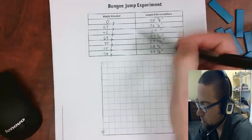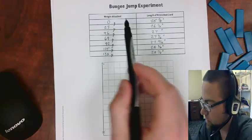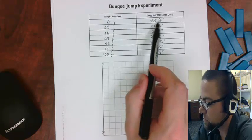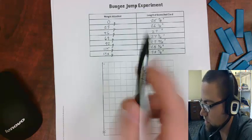Okay, welcome back. So your table should look something like this. When it was 0 grams, it was 25 and 7 eighths, 23 grams, and so on.